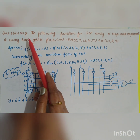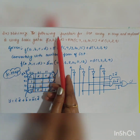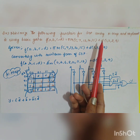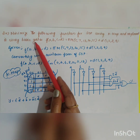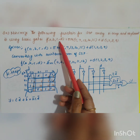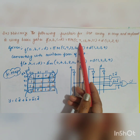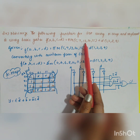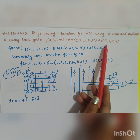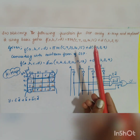The next question is to minimize the following function for sum of products using K-map and implement it using basic gates. The function f(a, b, c, d) is equal to pi M of 5, 7, 13, 14, 15 plus d of 1, 2, 3, 9.